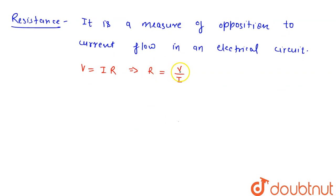Here V is potential difference and I is electric current. The SI unit of potential difference is volt and SI unit of current is ampere.